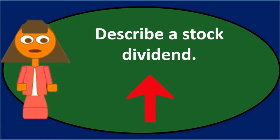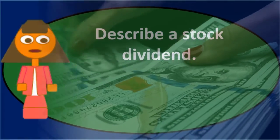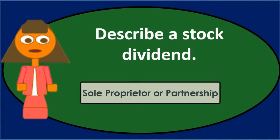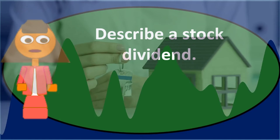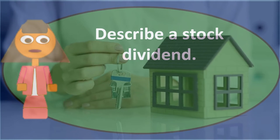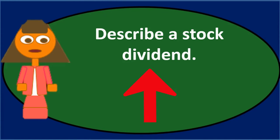Each shareholder receives a proportional amount based on shares owned. The normal kind of dividend would be a cash dividend. For a sole proprietor or partnership, you could distribute property or equipment as a draw. But for a corporation, giving equipment as a dividend doesn't make sense because you can't easily divide equipment among all shareholders.